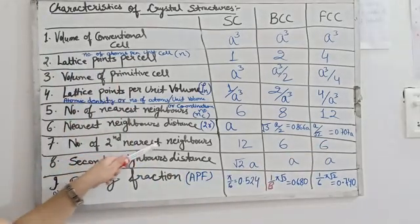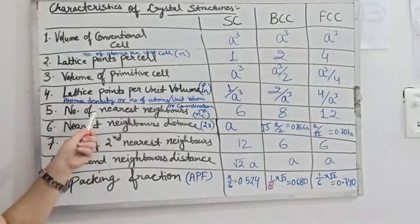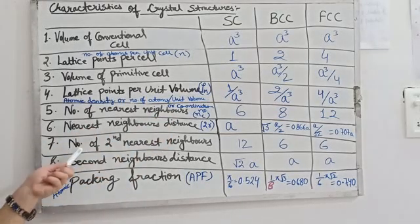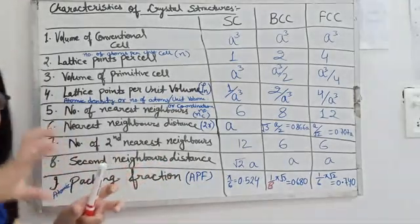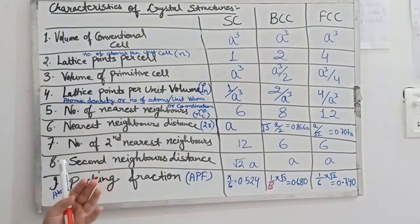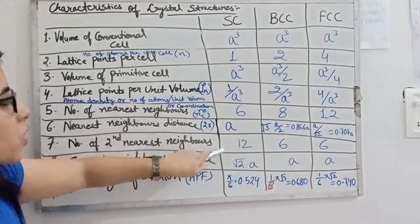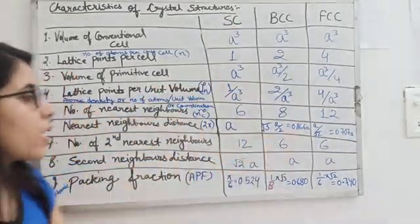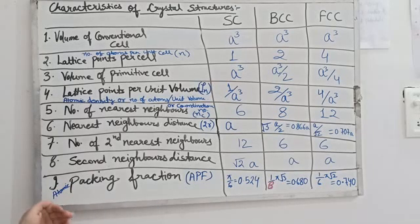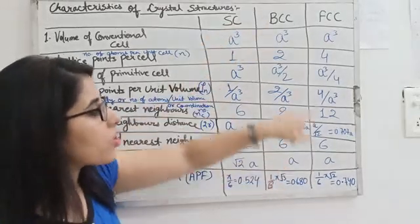The next property is the number of second nearest neighbors — the lattice points that are the next closest after the nearest neighbors. The second nearest neighbor distance for simple cubic is √2a, for body centered cubic it is a, and for face centered cubic it is also a.